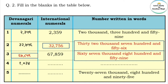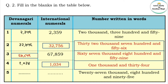Next: 1034. In Devanagari and International numerals it is written as 1034. In words it is one thousand and thirty-four. This is how you convert between Devanagari numerals, International numerals, and Indian number words.